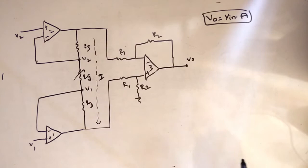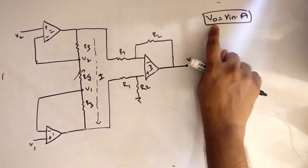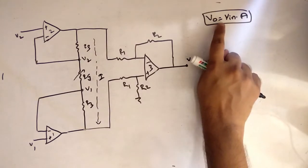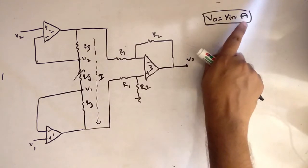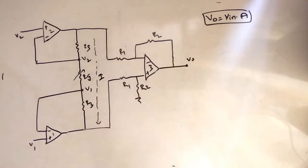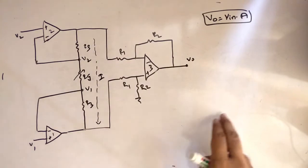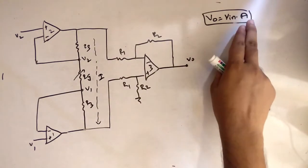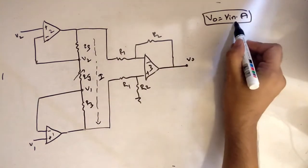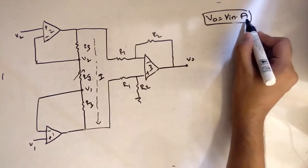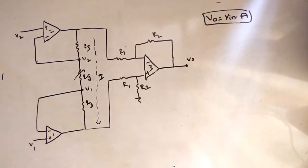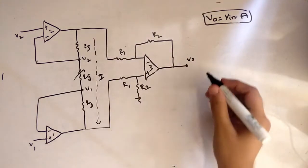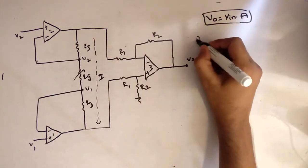What we have to prove is that the output voltage is equal to the input voltage multiplied by some gain, because we are amplifying. So input into the amplification factor, that is the gain, is equal to the output voltage. So we have to prove this.